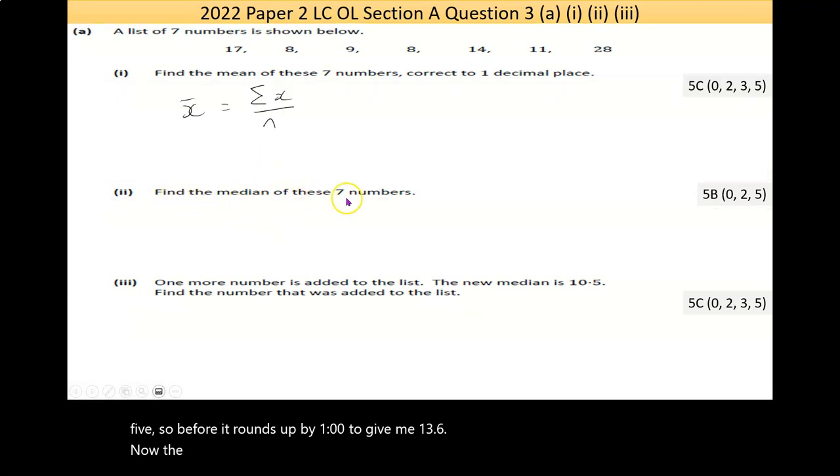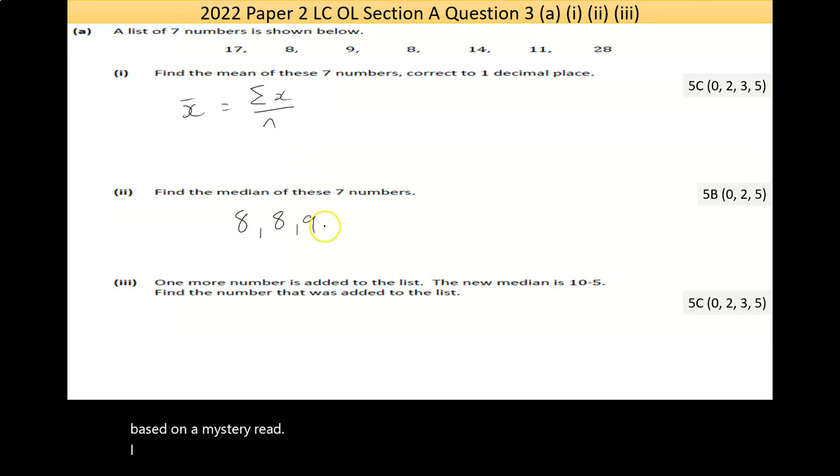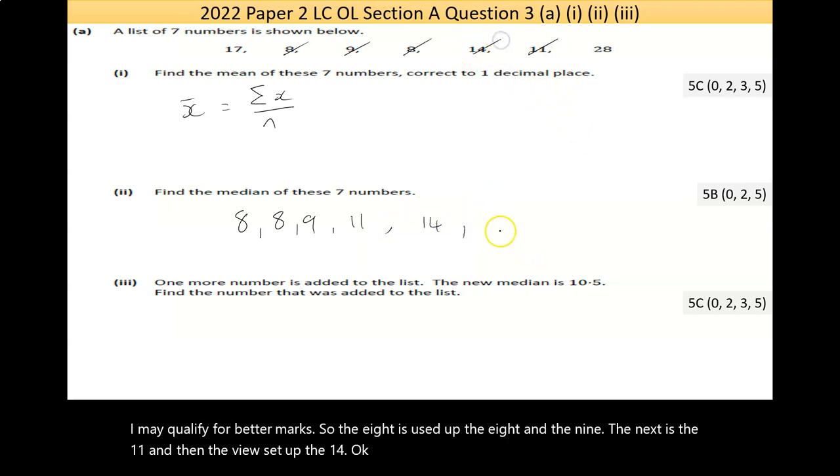Now the second part then says find the median of these 7 numbers. So to find the median we should write the numbers in increasing order. So it's very easy to make a mistake here, but I should, as I should in part 1, have shown my work. So if I do make an error based on a misread, I may qualify for better marks. So the 8 is used up, the 8, the 9, the next is the 11, and then the 14, the 17, and then the 28.